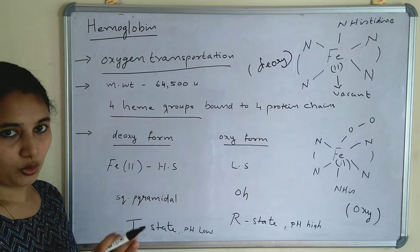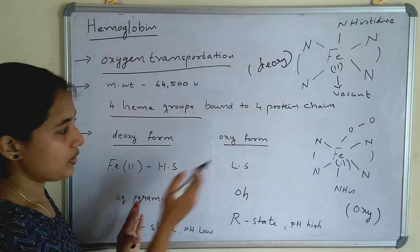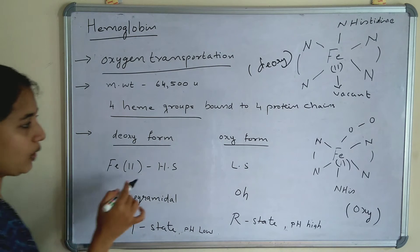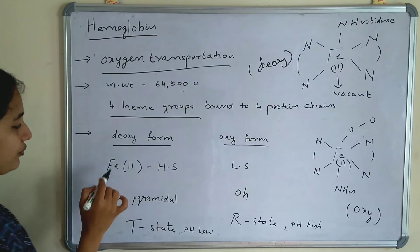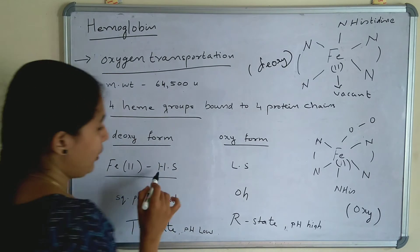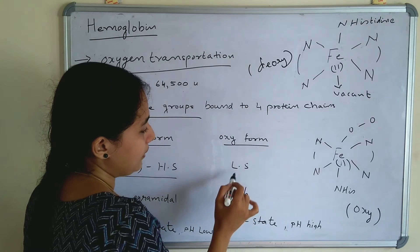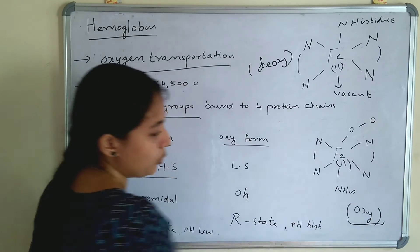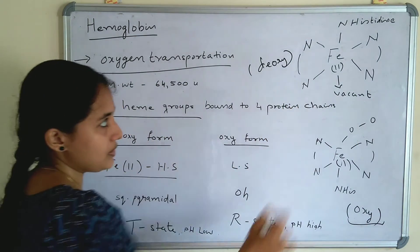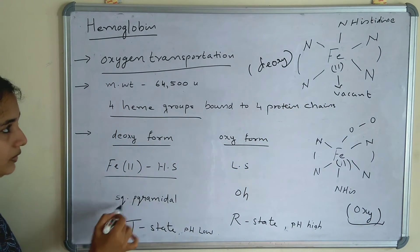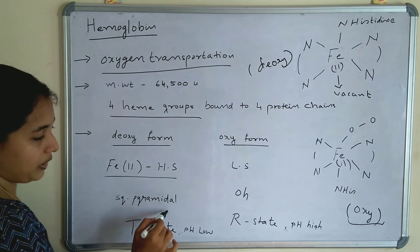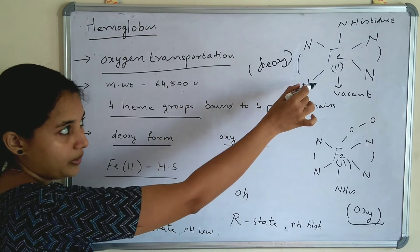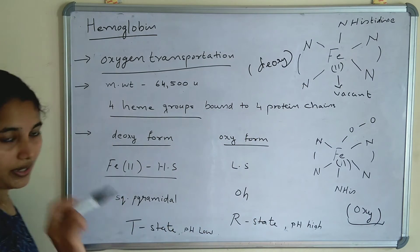Comparing the deoxy and oxy forms: in the deoxy form, Fe2+ is in the high spin state, while the oxy form is in the low spin state. Oxy is low spin, and deoxy is high spin. The deoxy form has square pyramidal geometry, while the oxy form has octahedral geometry.